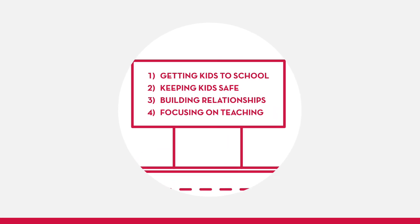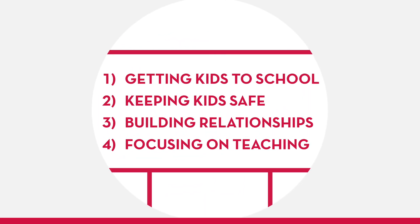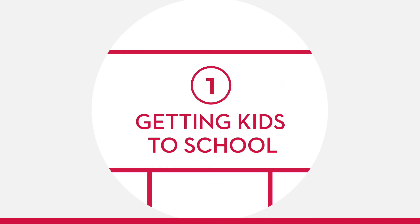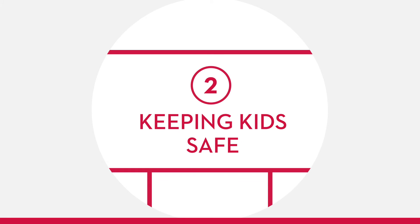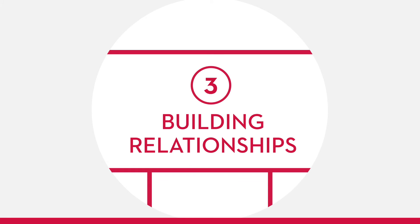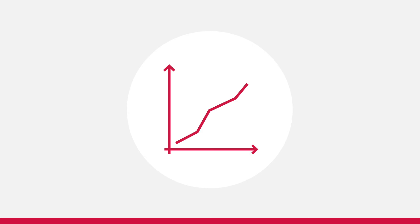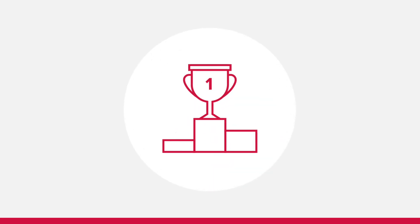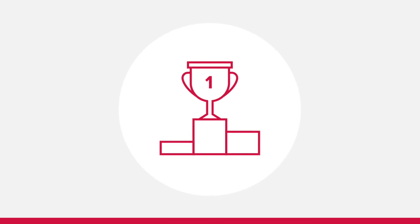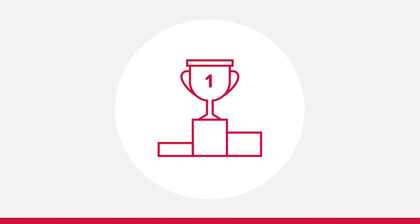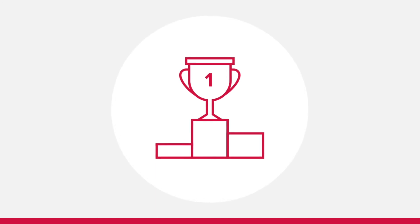Principal Barron focused the school on four goals in sequential order over a span of eight years: one, getting kids to school; two, keeping kids safe; three, building relationships; and four, focusing on teaching. By the end of Principal Barron's tenure, Smokey Road Middle School students were achieving above the state average, and the school eliminated achievement gaps for students with disabilities in math. In addition, Principal Barron was named the MetLife Middle School Principal of the Year in 2013. This is just one example of how focusing on a few targeted goals can make a big difference.